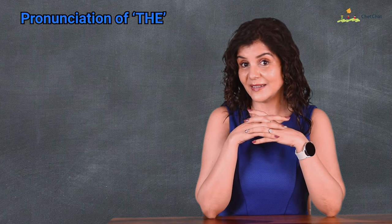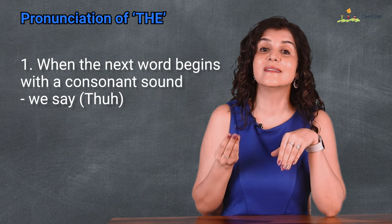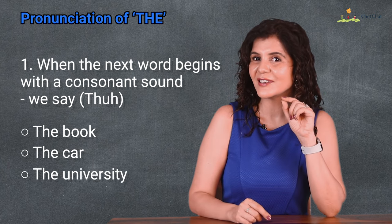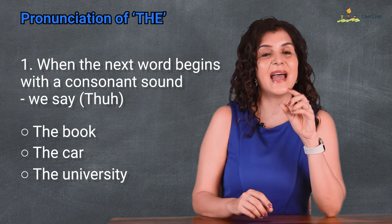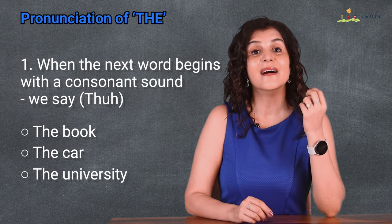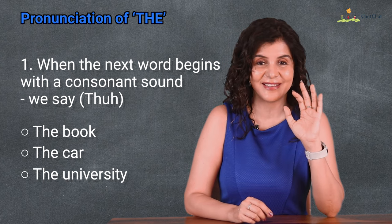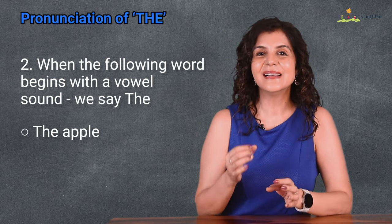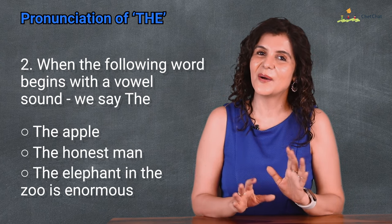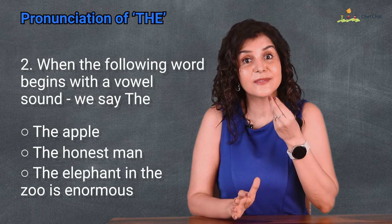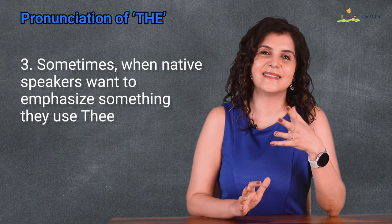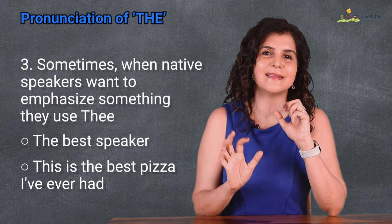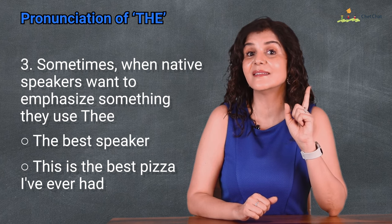There are two ways to pronounce the. When the word following begins with a consonant sound, we say 'thuh' — the book, the car, the university. Notice it need not actually be a consonant letter, just a consonant sound — even though university is written with a u, the sound is 'yoo', so we say 'thuh university,' not 'thee university.' When the following word begins with a vowel sound, we say 'thee' — the apple, the honest man, the elephant. Honest has a silent h, so the first sound is a vowel.